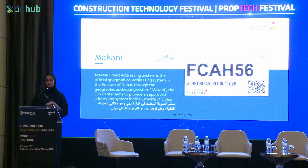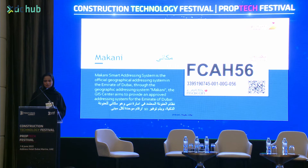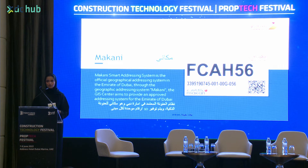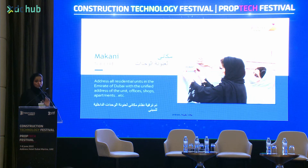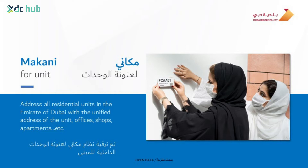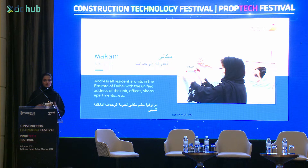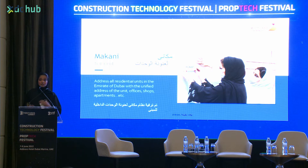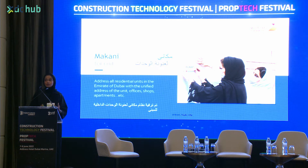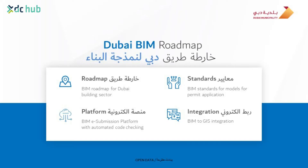One of the advantages of the Digital Twin is that we could upgrade our addressing system from Makani for buildings to Makani for units. Makani for buildings is a 10-digit number for each building. Now we have upgraded it to a unique code for each unit in Dubai. We started the project already and have used the Digital Twin to accommodate this, and we are using the unique unit codes to link data from other entities to make our Digital Twin more complete.